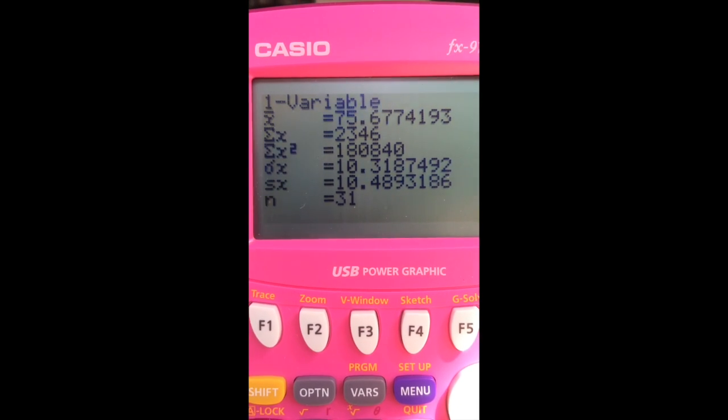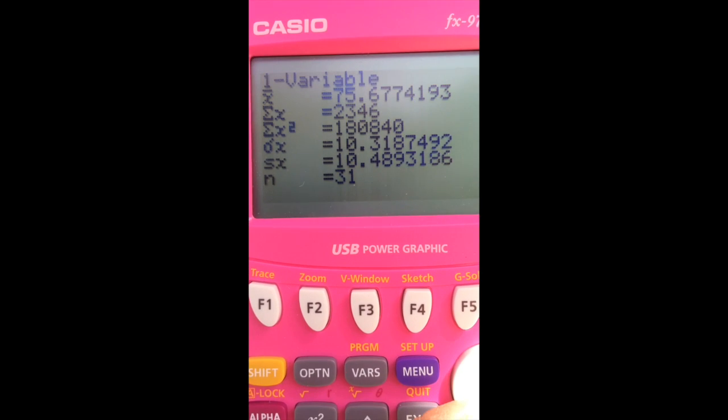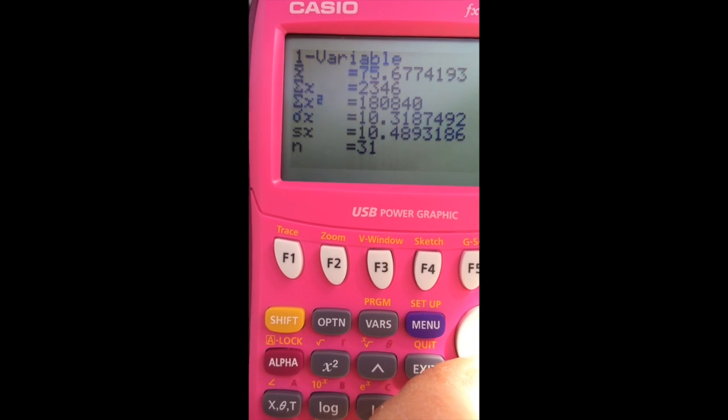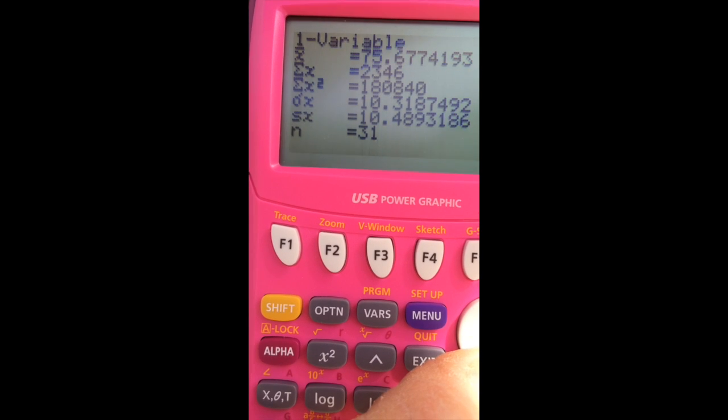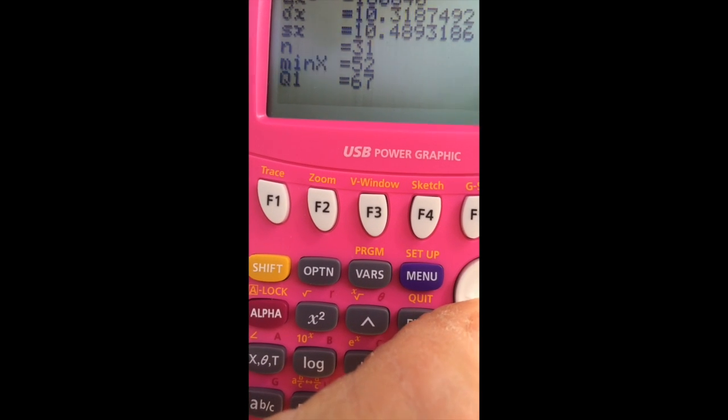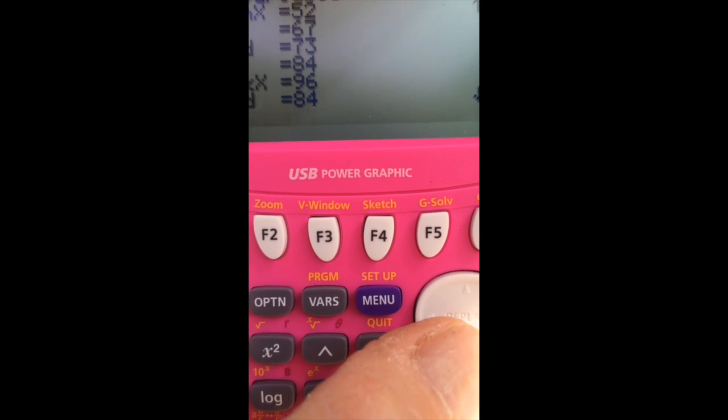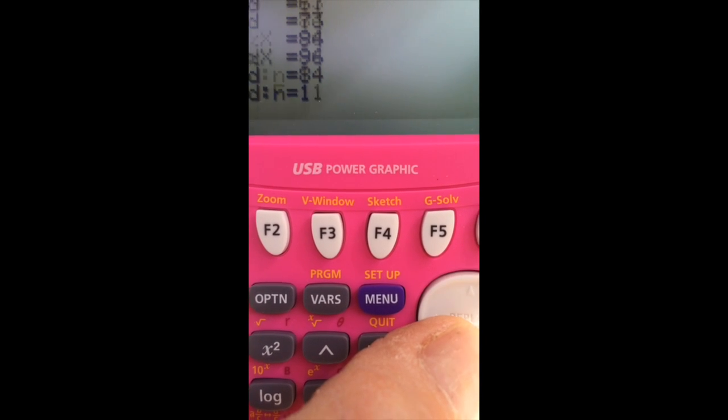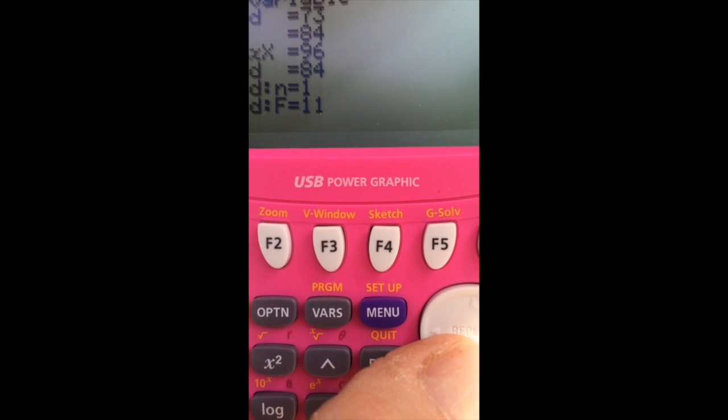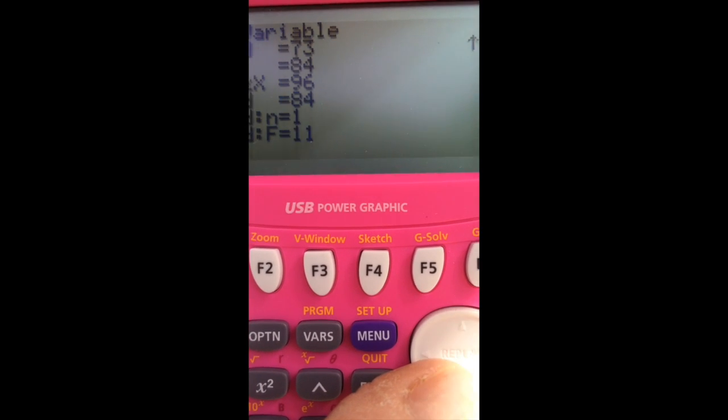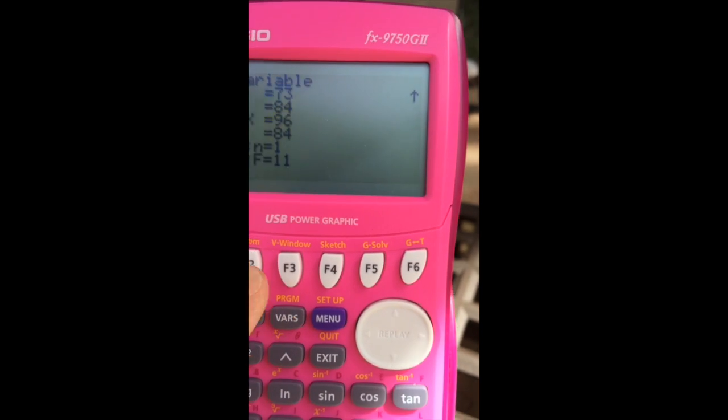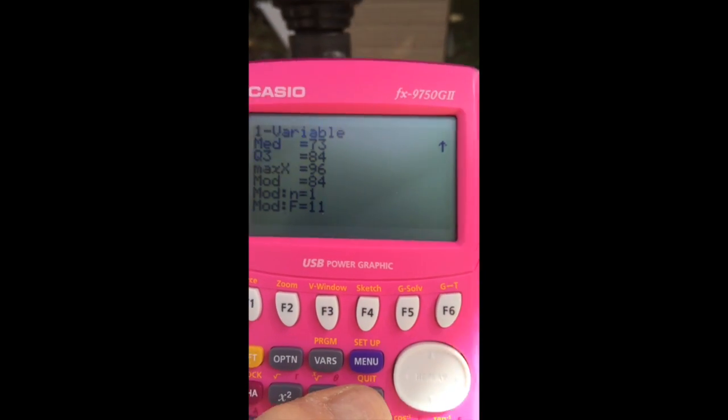And so for this data, my mean is 75. I have the population and sample standard deviations, and I have 31 numbers. And again, my 5-number summary, and the mode is 84. I have more 84s than anything else. Alrighty, and that's all there is to it.